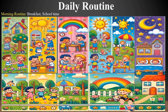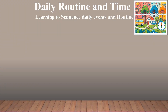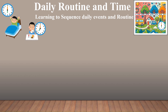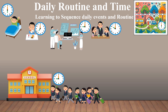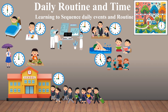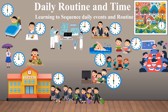Here is the daily routine given in picture form — you can pause the video and watch it. Morning routine: breakfast, school time. Afternoon: lunch. Evening activities: playtime, dinner. Night: bedtime. Here again you can see the daily routine with time, learning to sequence daily events: 6 o'clock wake up, 7 o'clock breakfast, 9 o'clock school/office time, 10 o'clock refreshment, 12 o'clock lunch, 5 o'clock swimming/playing/reading, 6 o'clock entertainment, 7 o'clock dinner, 9 o'clock bedtime.